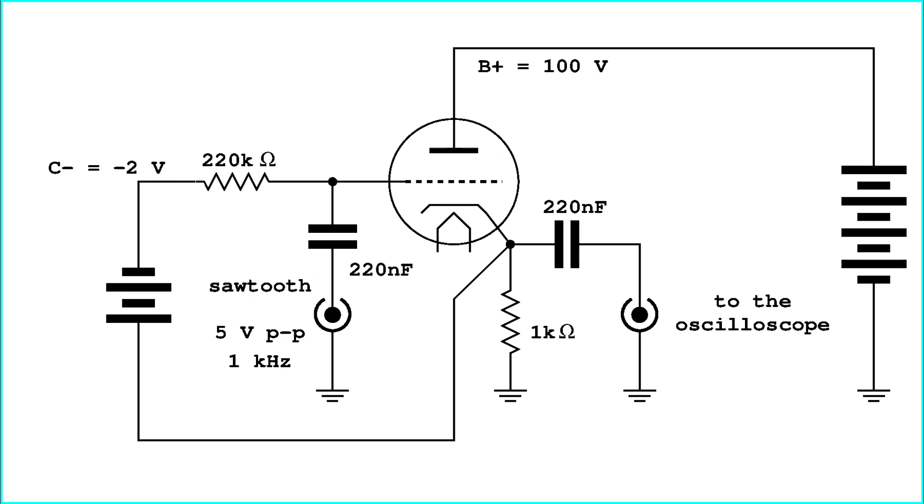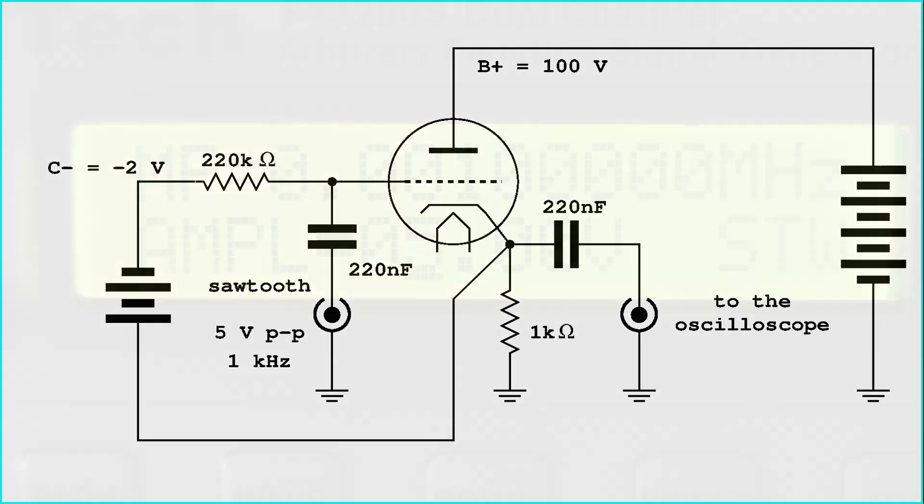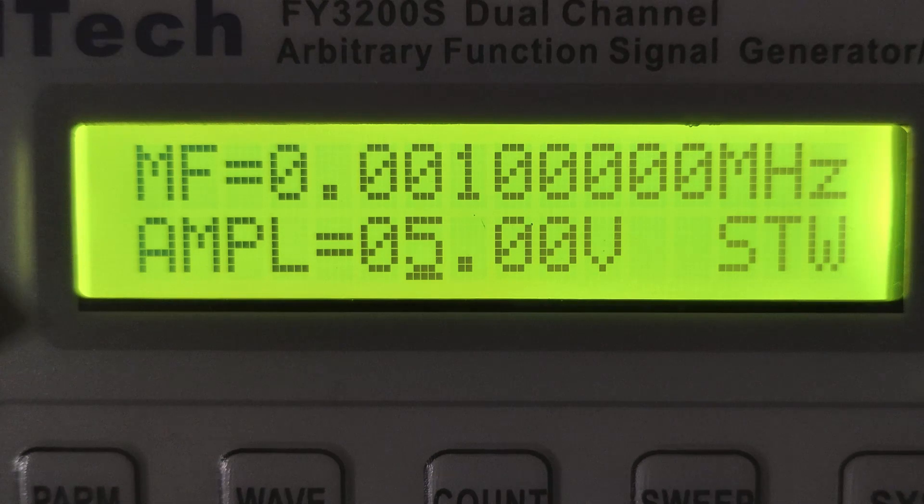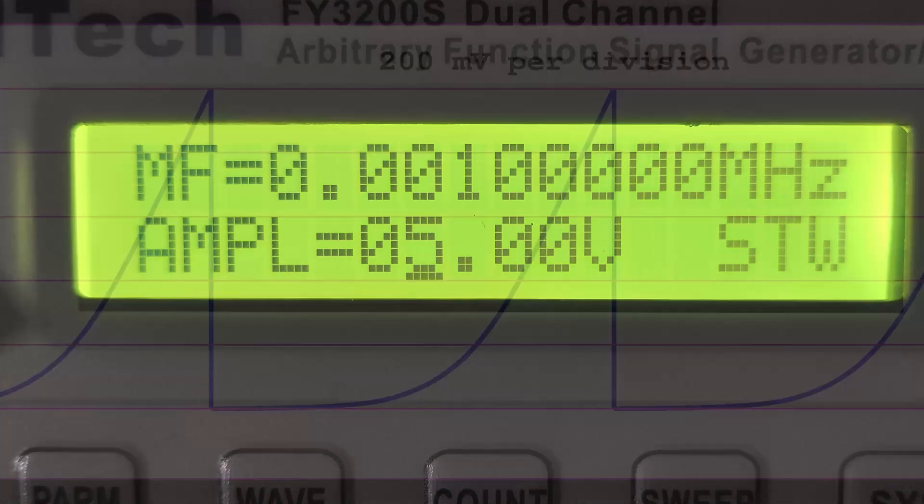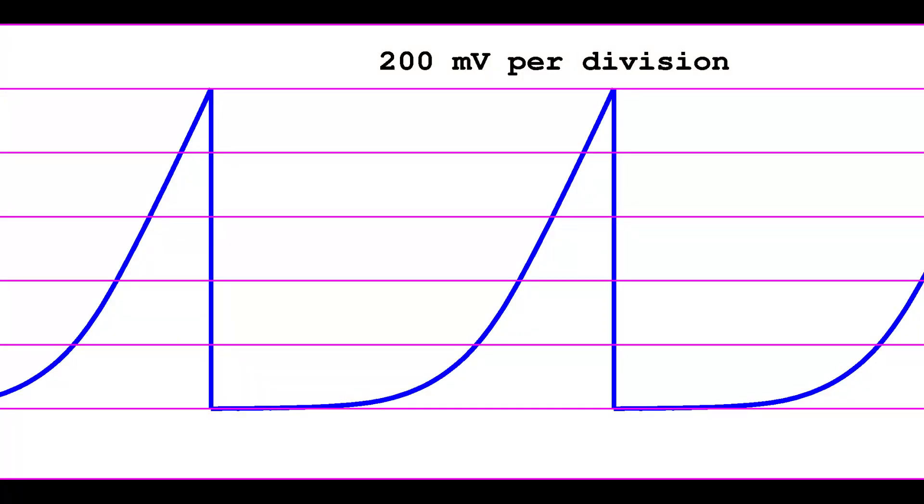Here is the corresponding practical circuit. The frequency of the sawtooth signal has been set to 1 kilohertz. Here is what the oscilloscope might show.